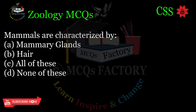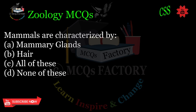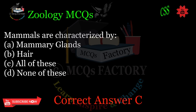Mammals are characterized by: A. Mammary glands. B. Hair. C. All of these. D. None of these. Correct answer: C.